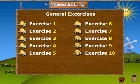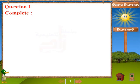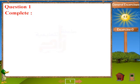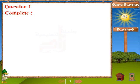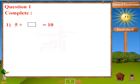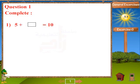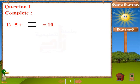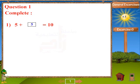Exercise 6, Question 1. Complete the equations. Problem 1: 5 plus blank equals 10. Answer: 5.